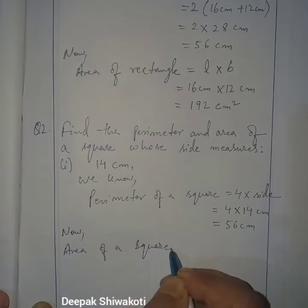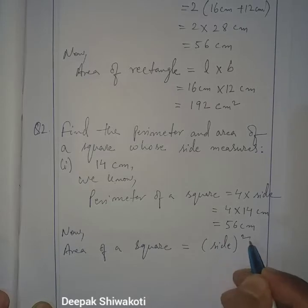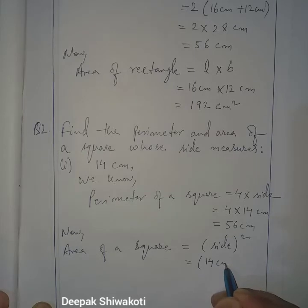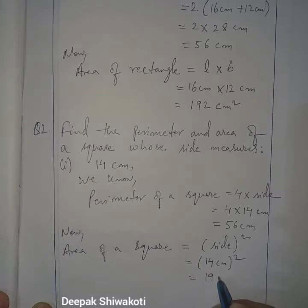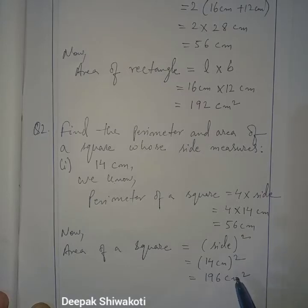Area of a square is given by side squared. So here 14 centimeter squared — 14 into 14 is 196 — and the area is 196 square centimeter. We got the area of the square.